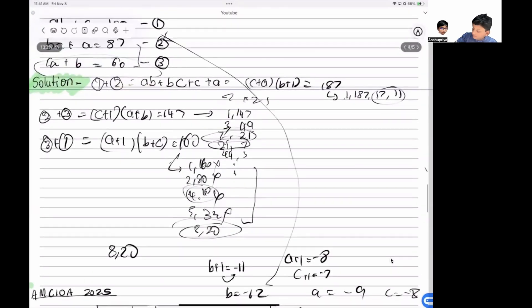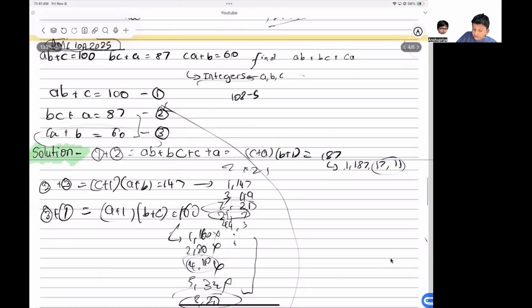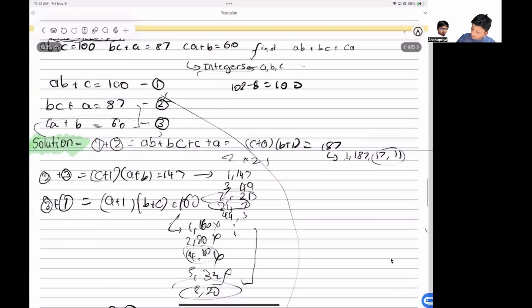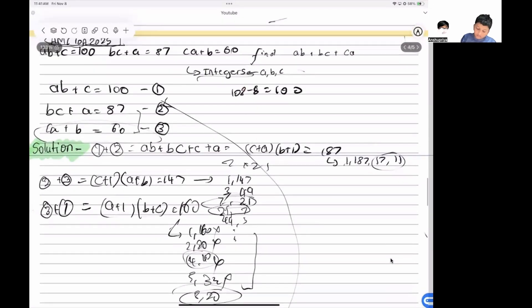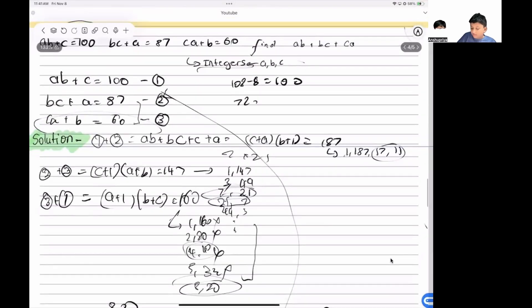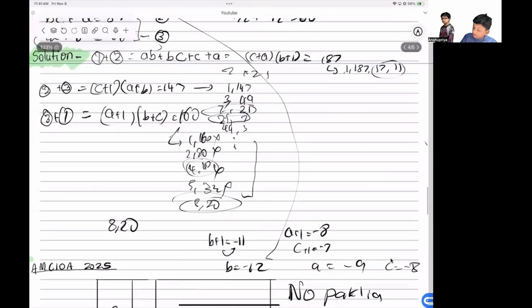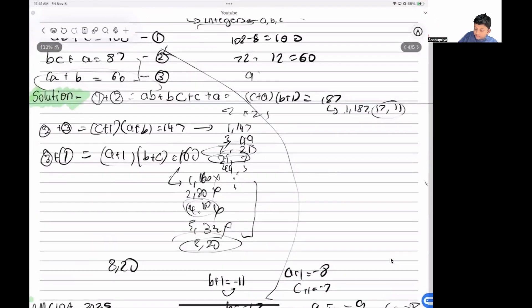Now if we put it in these equations, we get 108 - 8 = 100, 96 - 9 = 87, and 72 - 12 = 60. So the solutions are verified.